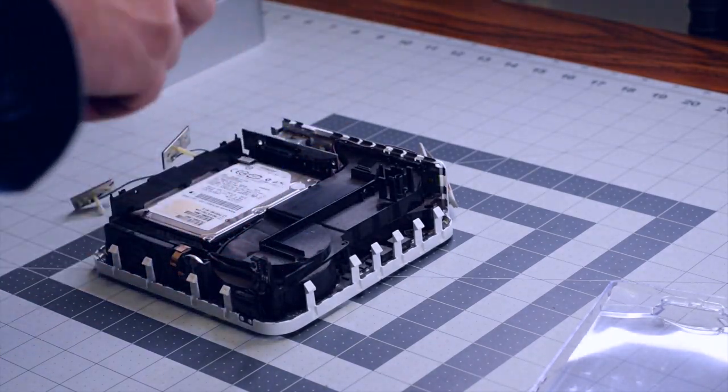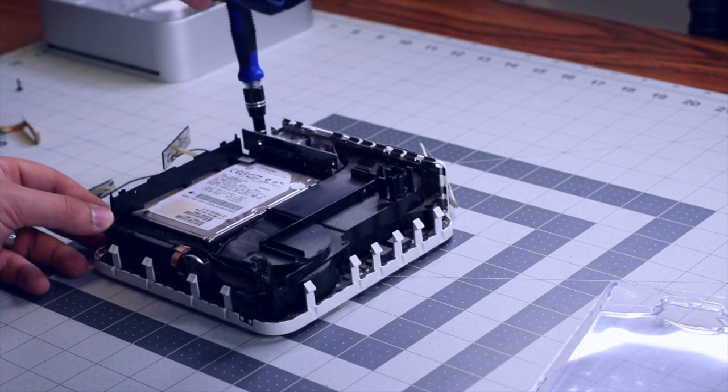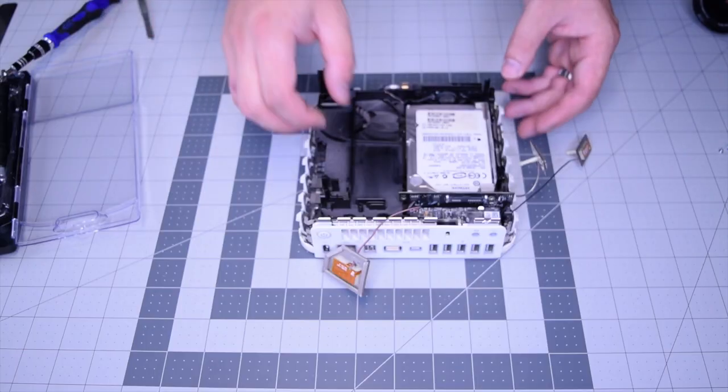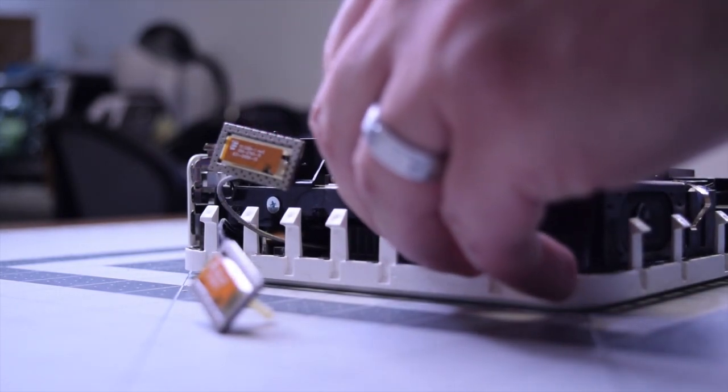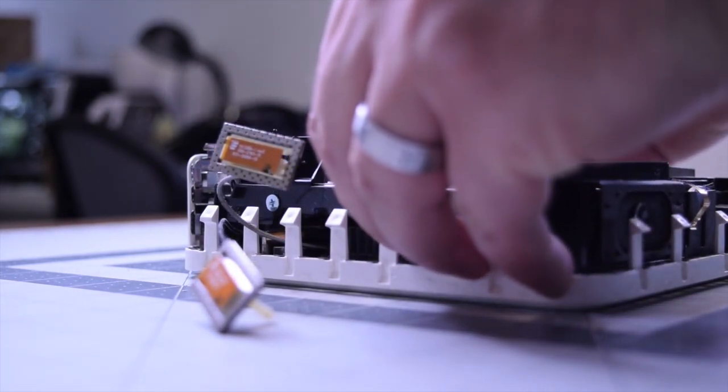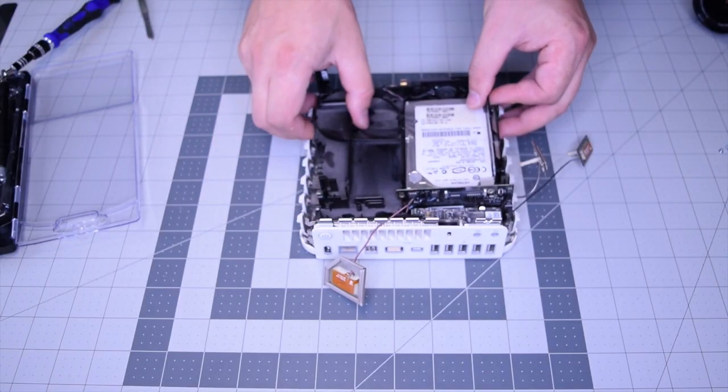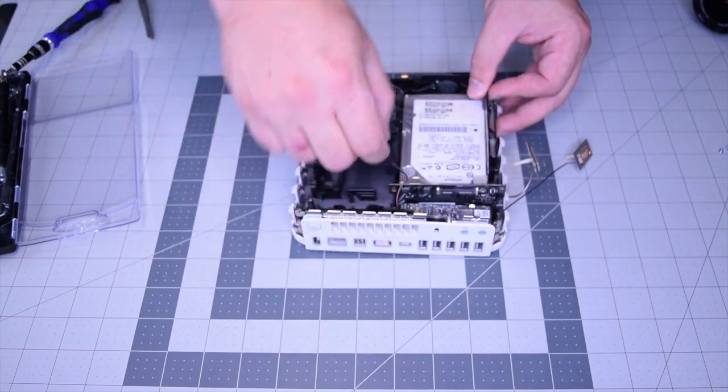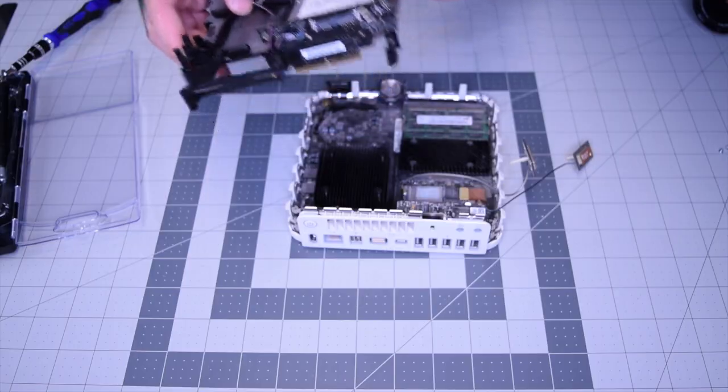With those four screws removed, go ahead and start prying and lifting up. That hard drive and bracket has a bridge that connects it to the logic board, so just gently push it up. One of the antennas might pop out like this red one that I just moved. It popped out during the removal.